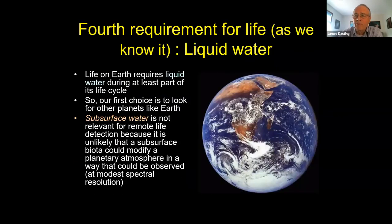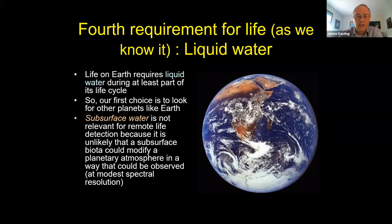The fourth requirement — the one this talk is focused on — is liquid water. This is where I get the most pushback from astrobiologists, because some are interested in looking for life on Saturn's moon Titan, which has liquid methane instead of liquid water. For astronomers looking at exoplanets, it's going to be really difficult if we see something that looks like Titan to figure out what the life signals are. We can look at Titan telescopically or with spacecraft, but we can't really tell much looking at the top of its atmosphere.